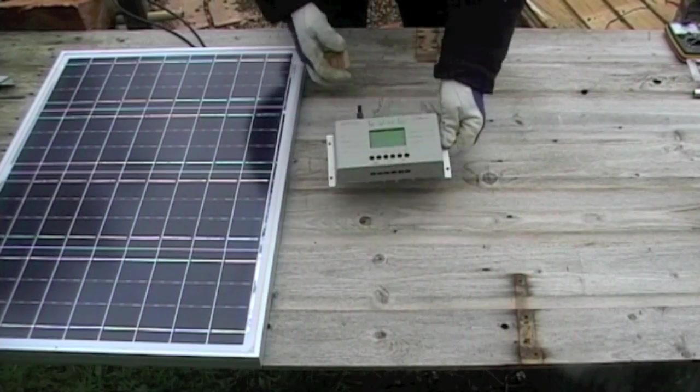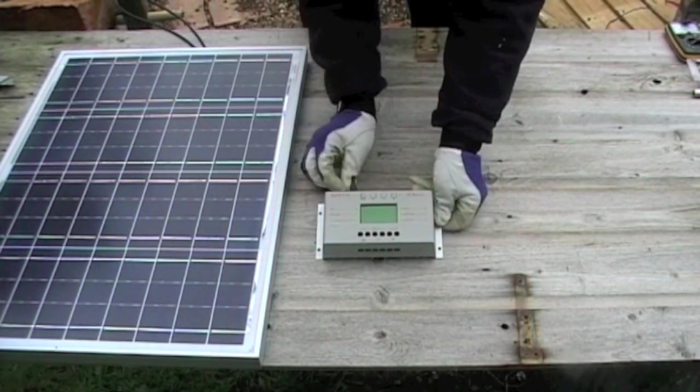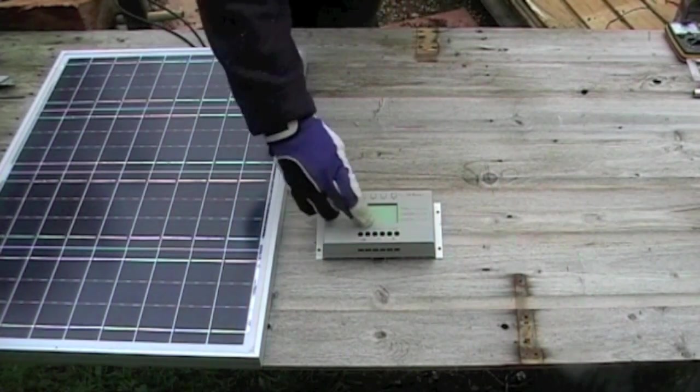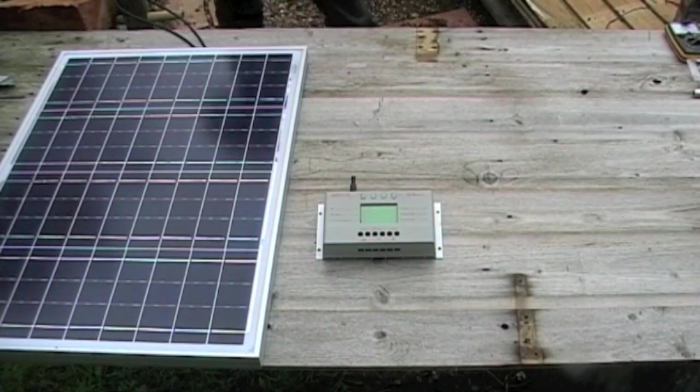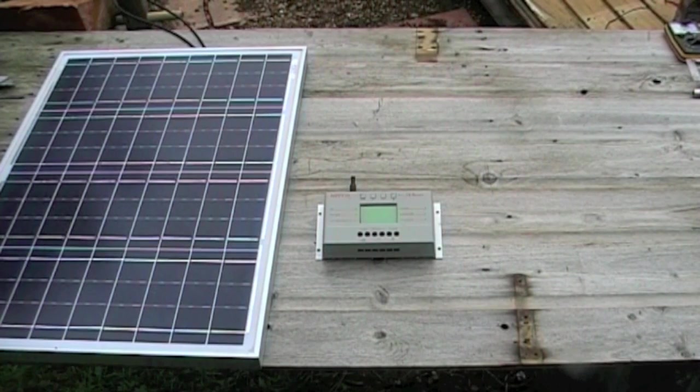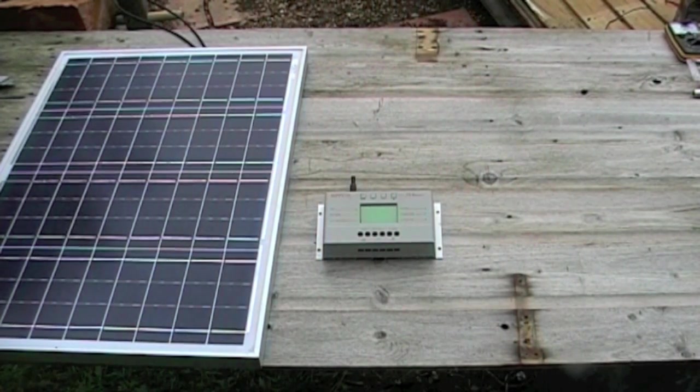Right, now I'm ready for the next component. This is the charge controller. This regulates the power coming from the panel. It stops the battery from being overcharged and also stops it from running completely flat. The black sensor on top is a temperature sensor and it'll shut off the system if things get too hot. It's kind of the brains of the outfit.